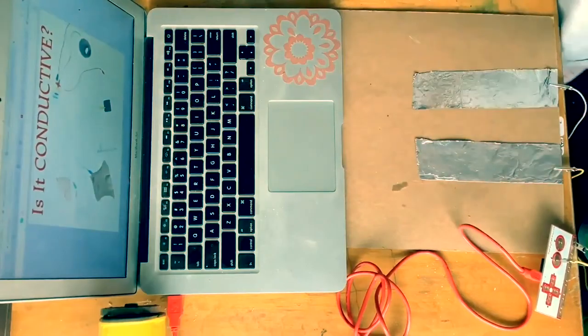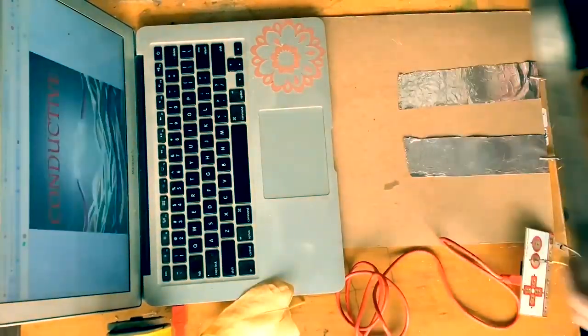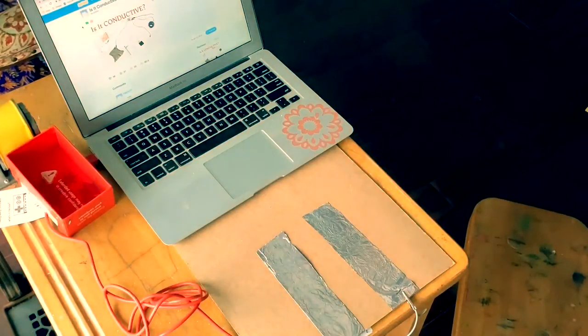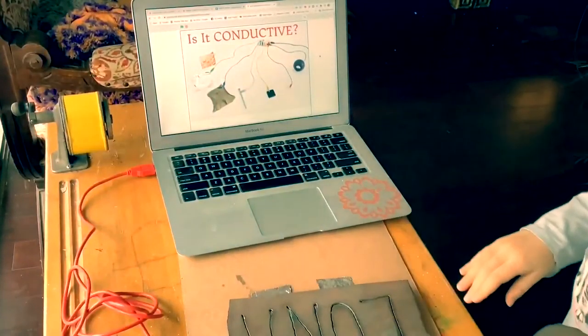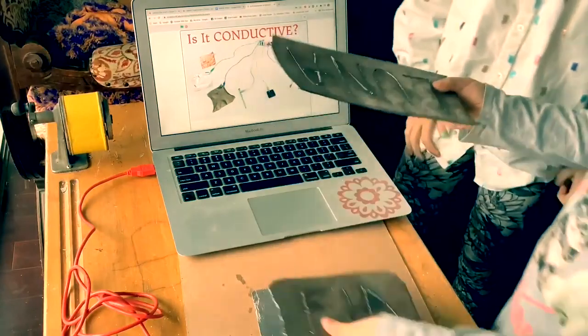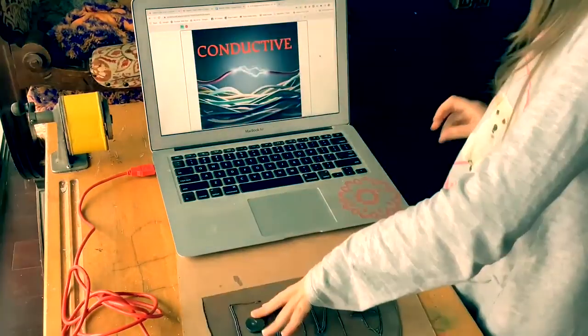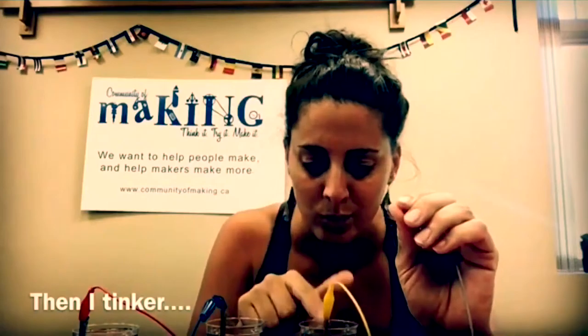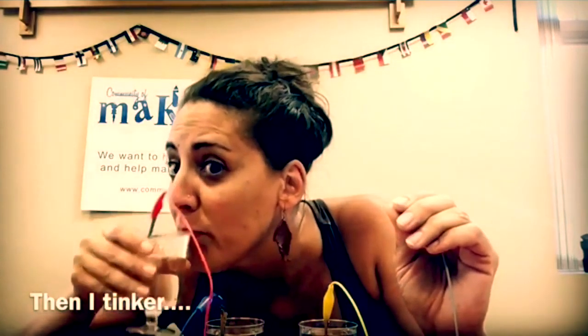Pure water is actually an insulator. But once water comes into contact with things like salt, humans, etc., it becomes contaminated. Because of this, free ions in water are what make water conductive. So let's watch Makey Makey and Water at Play. Think it, try it, make it.